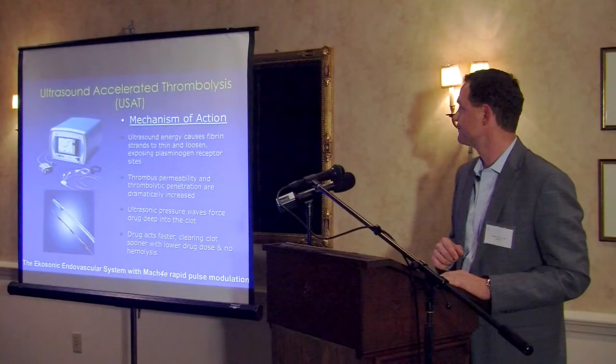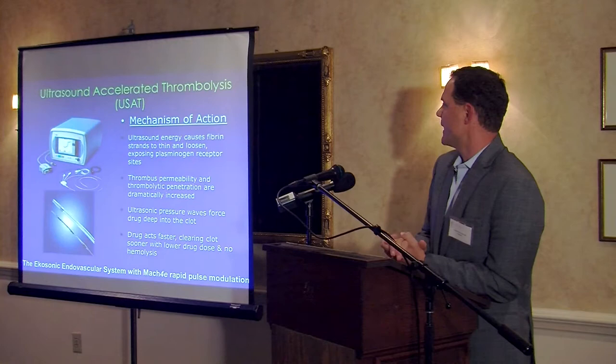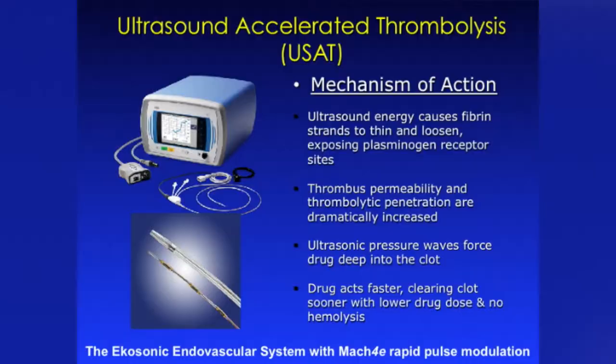Over the past three years, we've become experienced with a device called the ECOS endovascular system — ultrasound-accelerated thrombolysis. It's an endovascular catheter, about 5 inches long and less than about 1.5 millimeters in diameter. Inside the catheter is an ultrasound probe and a multi-hole catheter that expresses TPA directly into the embolus. The mechanism of action is that ultrasound energy causes fibrin strands to thin and loosen, exposing more plasminogen receptor sites and dramatically increasing thrombus permeability and thrombolytic penetration. The drug therefore acts faster, clearing clots sooner, with a lower drug dose and hopefully no hemolysis.